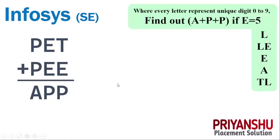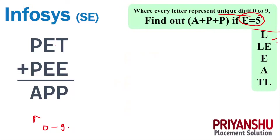So basically, the question is: every letter represents a unique digit from 0 to 9. The letters are P, E, T, P, E, E, A, P, P — all digits between 0 and 9. In the question they have told us that E equals 5, so at every place I just put 5.